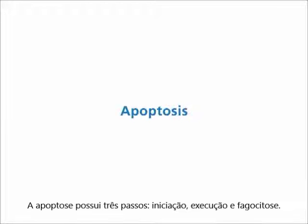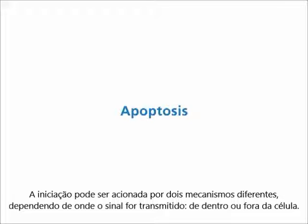Apoptosis extends over three steps: initiation, execution, and phagocytosis. Initiation may be triggered by two different mechanisms, depending on whether the initiating signal stems from inside or outside the cell.